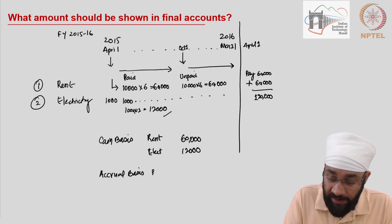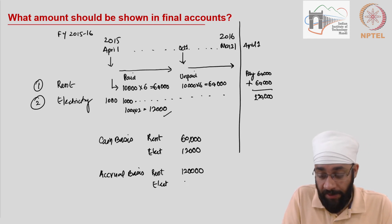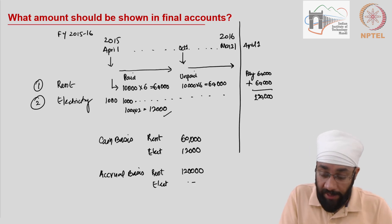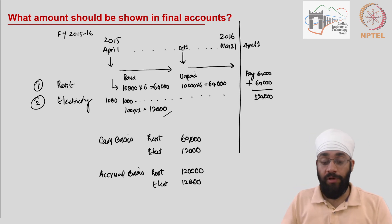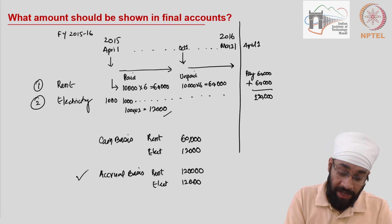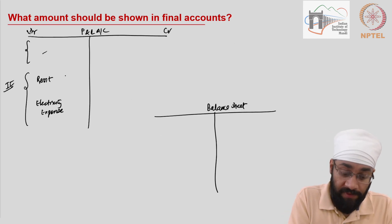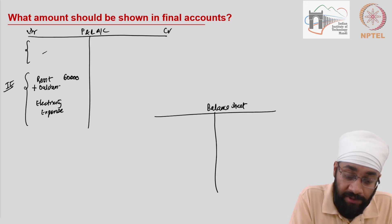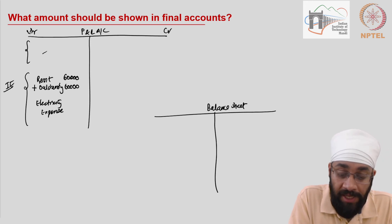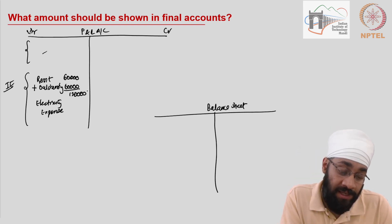So on accrual basis, the rent for the year is 120,000. Electricity expenses have been paid, so there is no accrual for electricity — 12,000 is the actual expense to show. Therefore, the amount to be shown is on accrual basis, not cash basis. The rent to be shown is 60,000 paid, plus outstanding rent of 60,000, so the expense for the current year should be counted as 120,000.